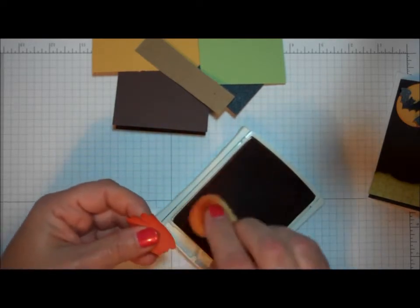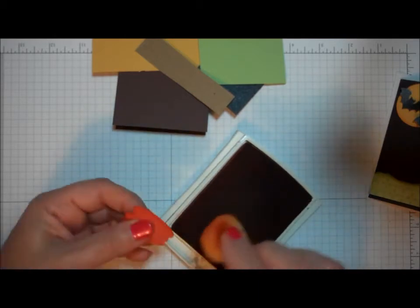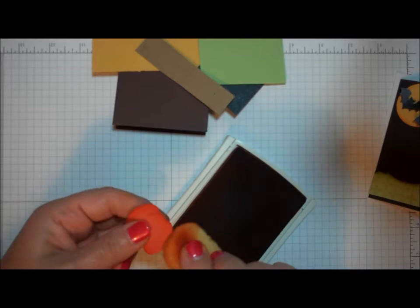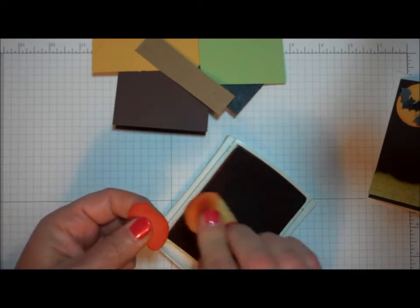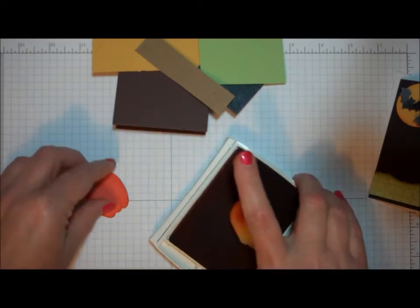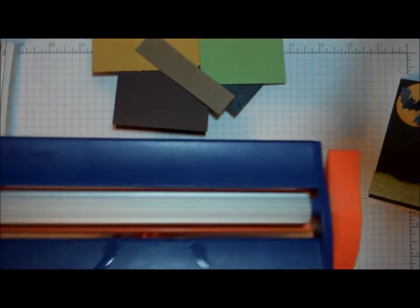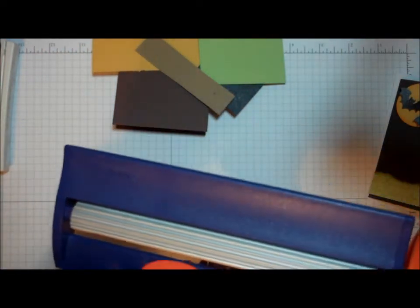Now, as I was putting my card together, I thought, wouldn't it be fun if my pumpkin had a little more dimension to it, like a real pumpkin. You know, a real pumpkin has those nice ridges. So what I decided to do was pull out my crimper.